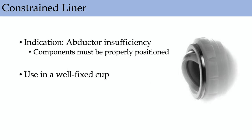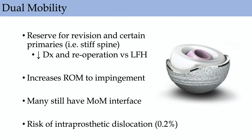Constrained liners are used for abductor insufficiency or failed salvage cases. Components must be properly positioned, requiring an ingrown cup — if placed in a non-ingrown cup, the forces will rip the cup out. Dual mobility is gaining popularity for revision cases and certain primaries such as stiff spine, providing increased range of motion before impingement. There's decreased dislocation and re-operation rate compared to large femoral heads, and they're more cost-effective. Modular dual mobility cups can have metal-on-metal interfaces, carrying a risk of metal ions, and there's also a small risk of intra-prosthetic dislocation.